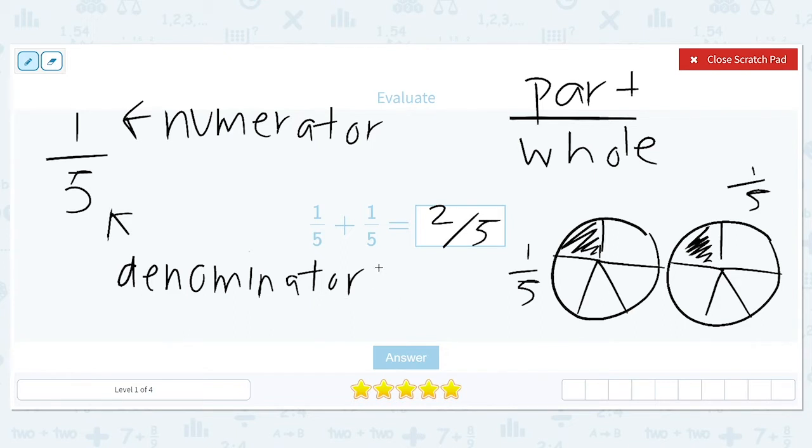We need to keep in mind that we can only add fractions when the denominators are the same. Because let's say I had a pizza that was split up into eight pieces. The size of a fifth is much bigger than the size of a little eighth. So you always want the whole to be the same, and you're just going to add the parts. So we did one fifth plus one fifth gave us a total of two fifths.